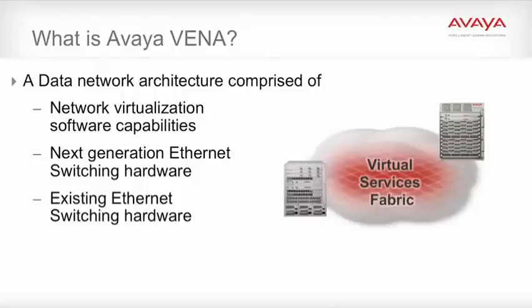Third, the Avaya Ethernet Routing Switch 8800 and 8600, that with a simple software upgrade can enable the virtual services fabric. This continues a tradition of investment protection for our customers. Avaya's unique, fully programmable packet processor technology eliminates the need for a rip and replace of hardware.